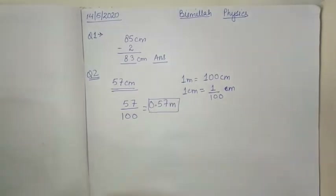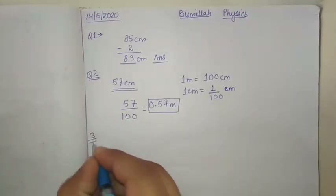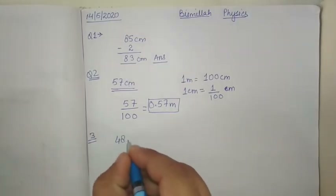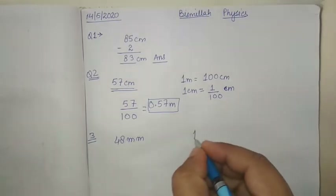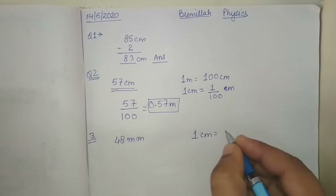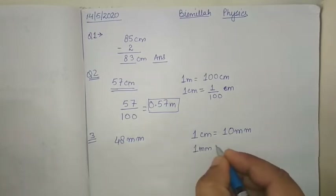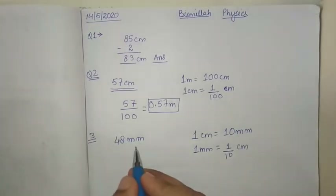The third question: express the following in centimeter. I am solving only one part — if you have any doubt you can ask me. We have 48 mm and we have to convert it to centimeter. We know 1 centimeter is equal to 10 mm, or in other words 1 mm equals 1/10 centimeter. To convert mm to centimeter, we divide by 10.